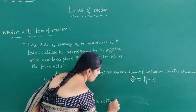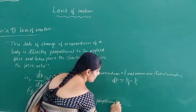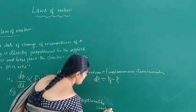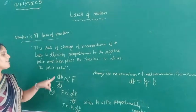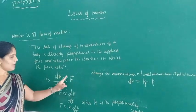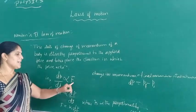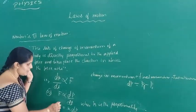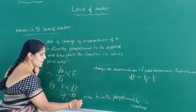Here k is the proportionality constant. So this is Newton's second law of motion: the rate of change of momentum of a body is directly proportional to the applied force and takes place in the direction in which the force acts. In mathematical form, this can be written as vector F equals k times dP/dt.